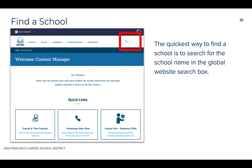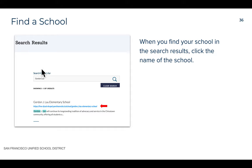You can find schools a couple different ways, but the quickest way is to use the global search box in the upper right hand corner of the website. This is a free text search that will search all of the content on the entire website. You can enter your school name and you should find it in the search results. In this example, I've typed in Gordon Lau and found Gordon J Lau Elementary School.